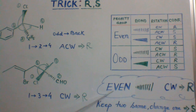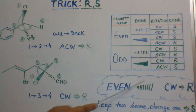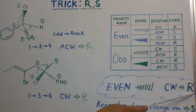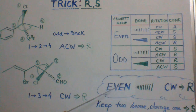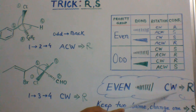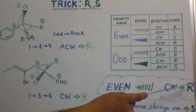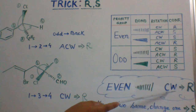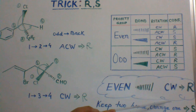If you change any one of these three, it will turn to S configuration. Now, if you change any two of these — even becomes odd, thin line becomes thick, and clockwise remains — it will be R. Or if even becomes odd, the line stays the same, and clockwise becomes anticlockwise — it will be S. If you change all three: even becomes odd, thin line becomes thick, clockwise becomes anticlockwise — then it will be R.